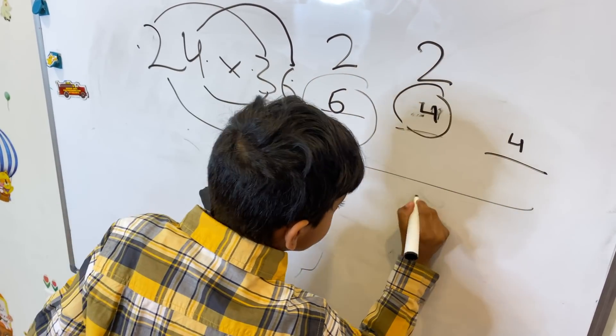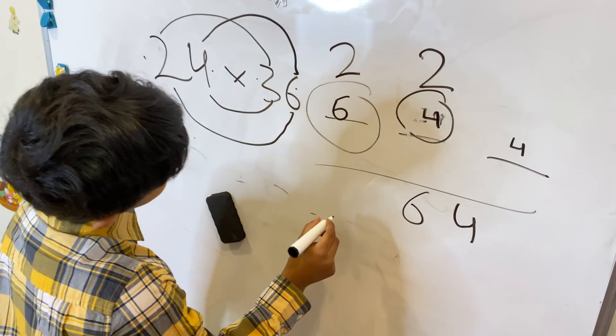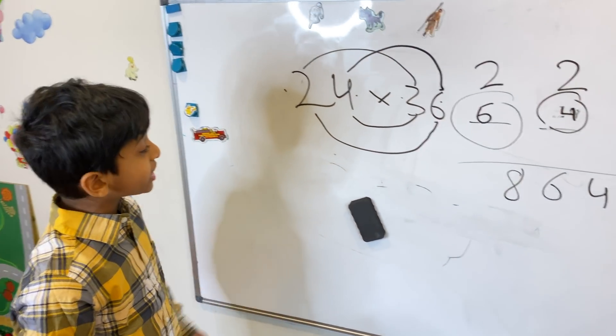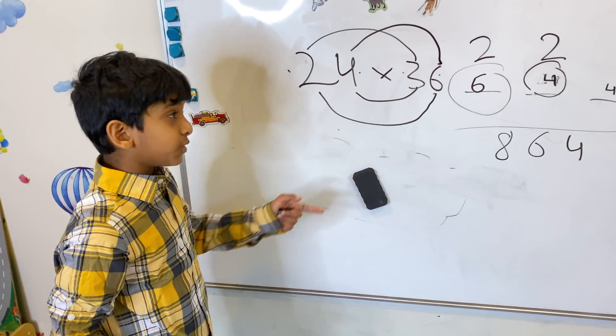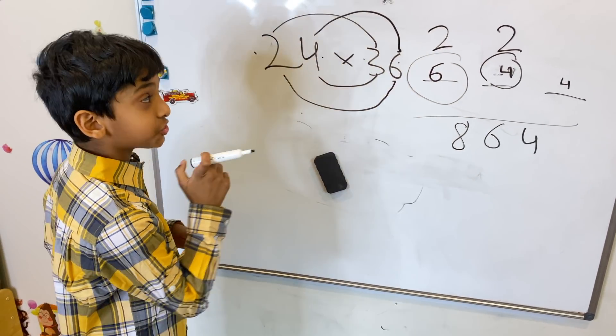Since you see this 2 here, that has to add on to this. So 4 plus 2 is 6. Bring the 4 out, and 2 plus 6 is 8. 864. That was the same answer we got on the regular way, but do you just notice this took way less time. So that's why I wanted to show you this trick.